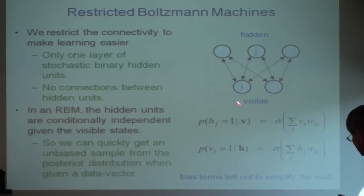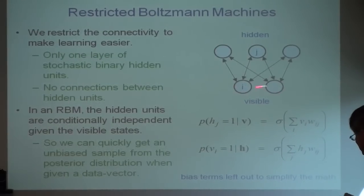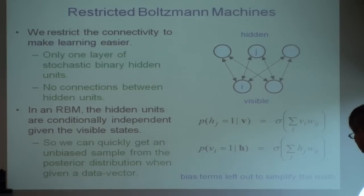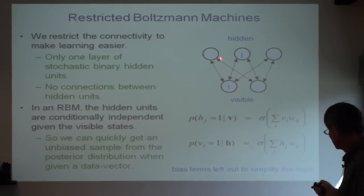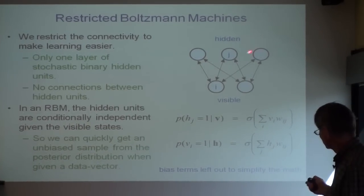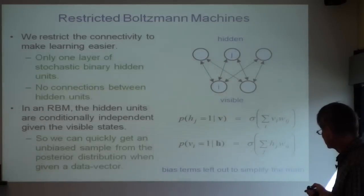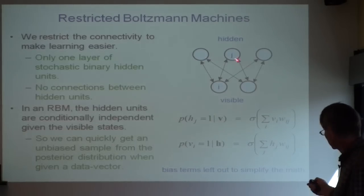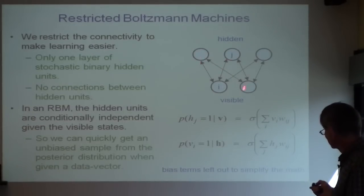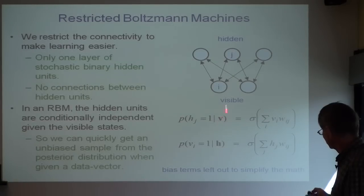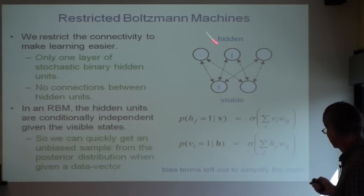The basic learning module consists of some variables that represent things like pixels — these will be binary variables for now. Some variables that are latent variables, also binary, and there's bipartite connectivity, so these don't connect to each other, and that makes it very easy if I give you the states of the visible variables to infer the states of the hidden variables. They're all independent given the visible variables, because it's an undirected graph, and the inference procedure just says the probability of turning on hidden unit Hj given visible vector v is the logistic function of the total input it gets from the visible units.